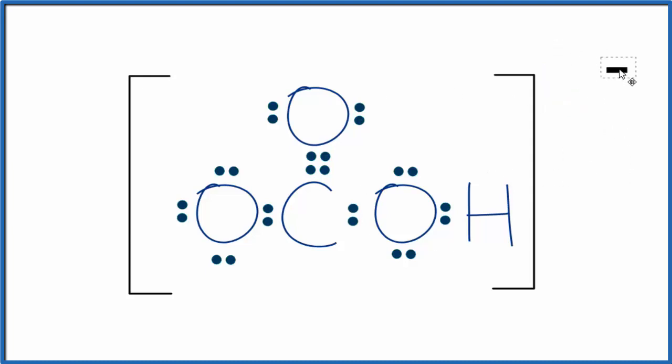This negative would be on this oxygen here with the single bond. So this is our Lewis structure. If you need help drawing this or looking at the formal charges, there's links in the description and at the end of this video.